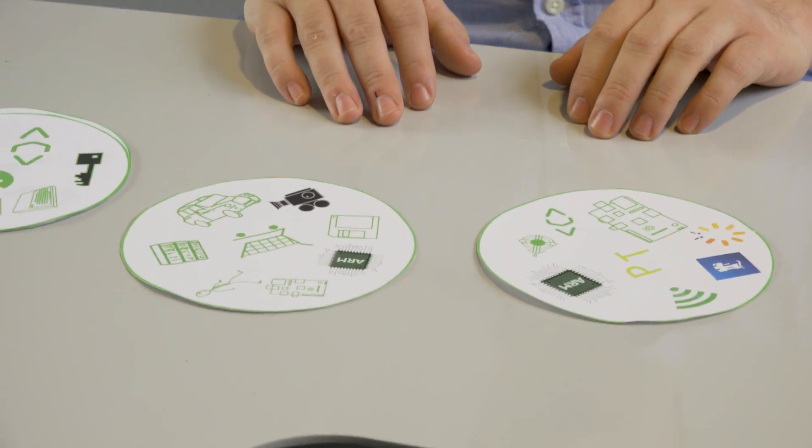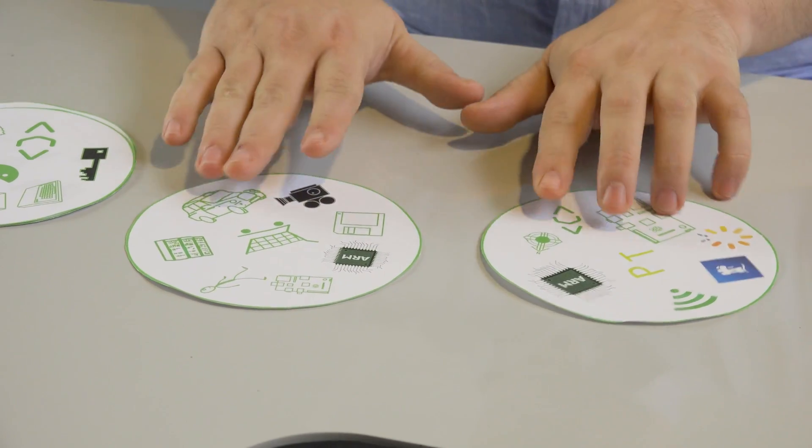So let's look at a pair of Gobble cards. What do they have in common? They both have an ARM processor. Okay, so we can have a Venn diagram.